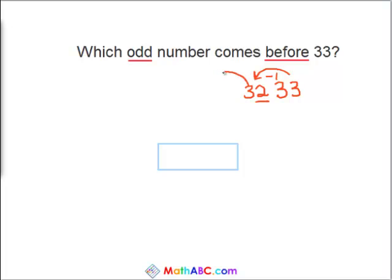So we need to jump one more. So minus one more, and that would be 31. And as you can see, 31 is an odd number, and so that would be the next, the closest odd number that comes before 33.